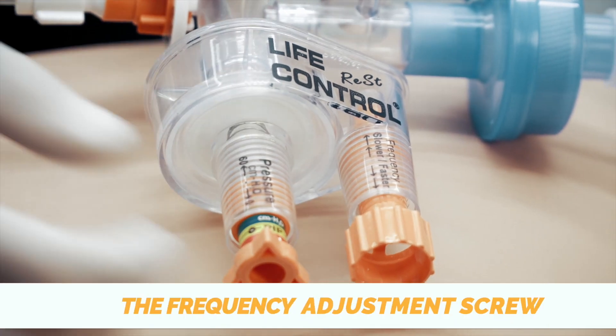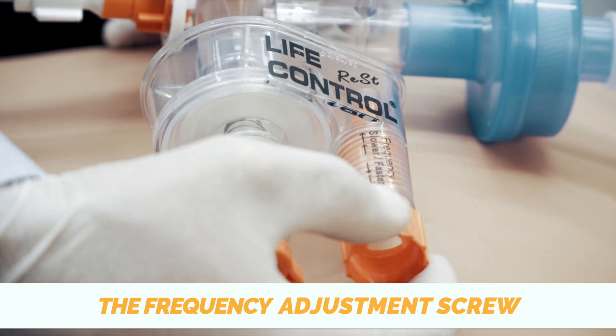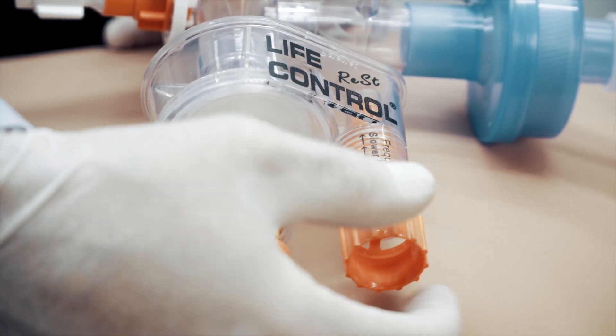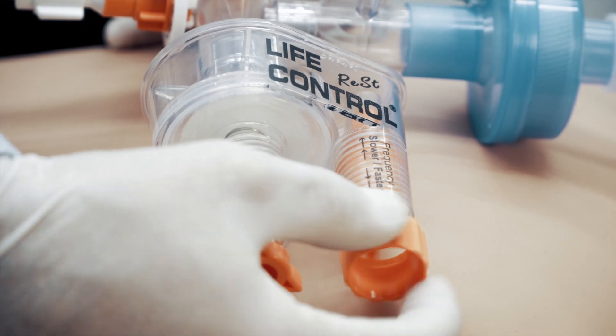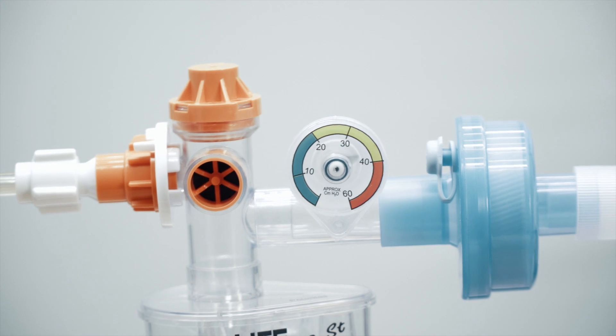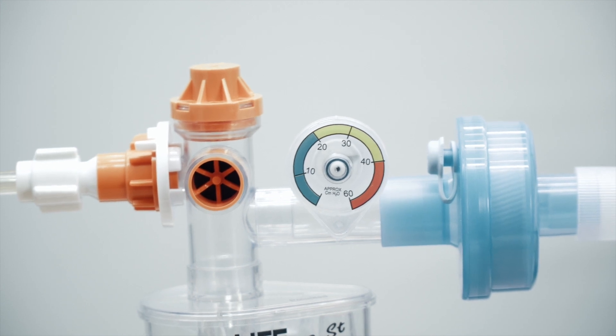The frequency adjustment screw. When turned upwards, the respirator rate decreases. When turned downwards, the respirator rate increases. In case of obstruction in the airway, the manometer gives a vibrating and audible warning.